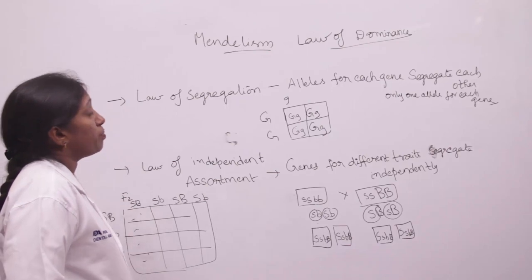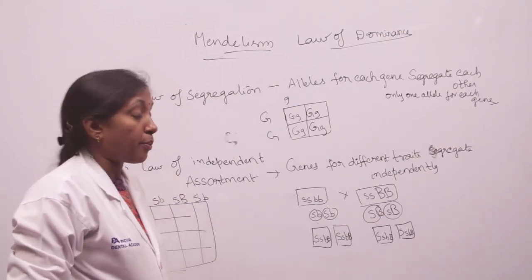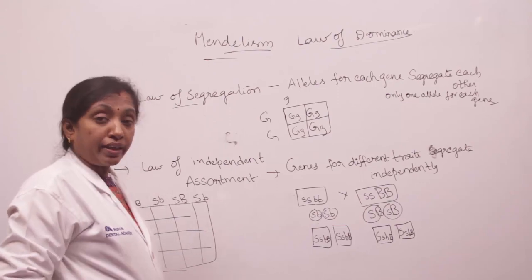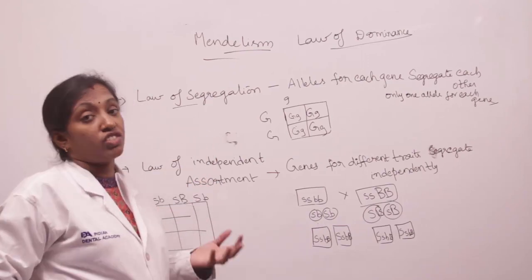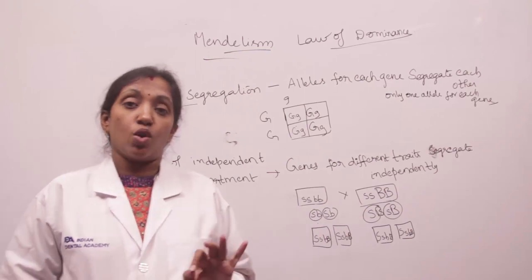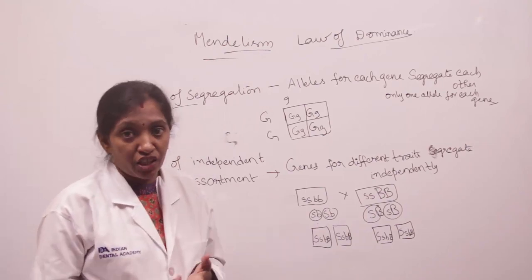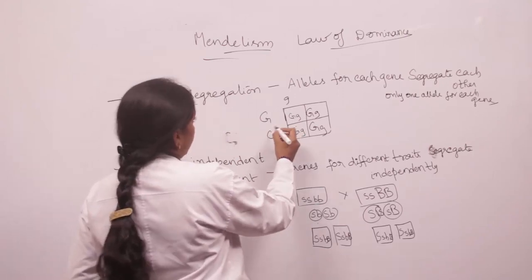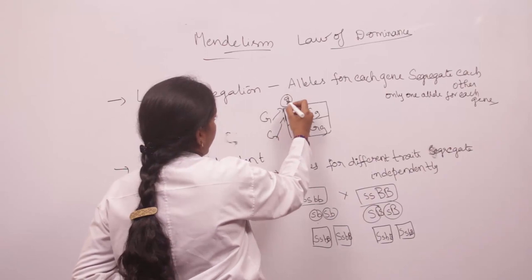Coming to Mendel's laws of inheritance, there are three laws. The first is the law of segregation: during gamete fusion, the alleles for each gene segregate from each other, and each gamete consists of only one allele for each gene. An allele is one of the ordered pair of genes controlling one trait.